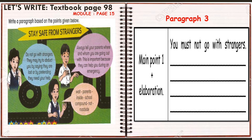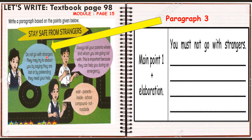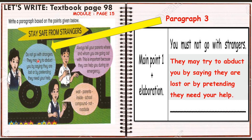What about paragraph 3? For paragraph 3, you can take this point: do not go — you can change it to you must not go with strangers. And then you can write: they may try to abduct you by saying they are lost or by pretending they need your help. So the main point is: do not go with strangers. And the elaboration is: they may try to abduct you by saying they are lost or by pretending they need your help. So this is for paragraph 3.